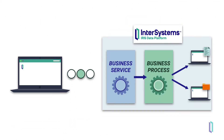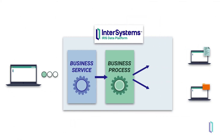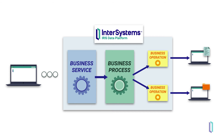Business processes then send messages to business operations, which in turn send data out to other applications. So in the case where messages would be routed, you would have one business operation that would send data out to the ticket application, and another business operation that would store data to an archive.